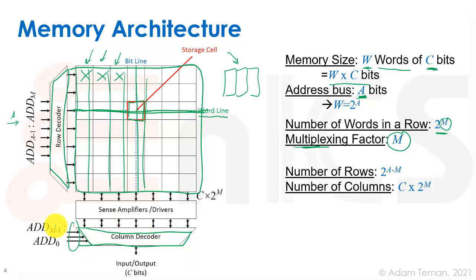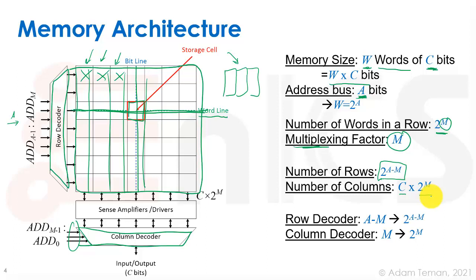We have a 2^M-to-1 column decoder, meaning we use M address bits to select which word we want. The remaining A minus M address bits select the row, so the number of rows is 2^(A-M). Since each row has C bits per word and 2^M words, the total number of columns is C times 2^M. The row decoder is therefore an (A-M)-to-2^(A-M) decoder — we use the MSBs, and it drives a one-hot output selecting exactly one word line out of 2^(A-M) rows.